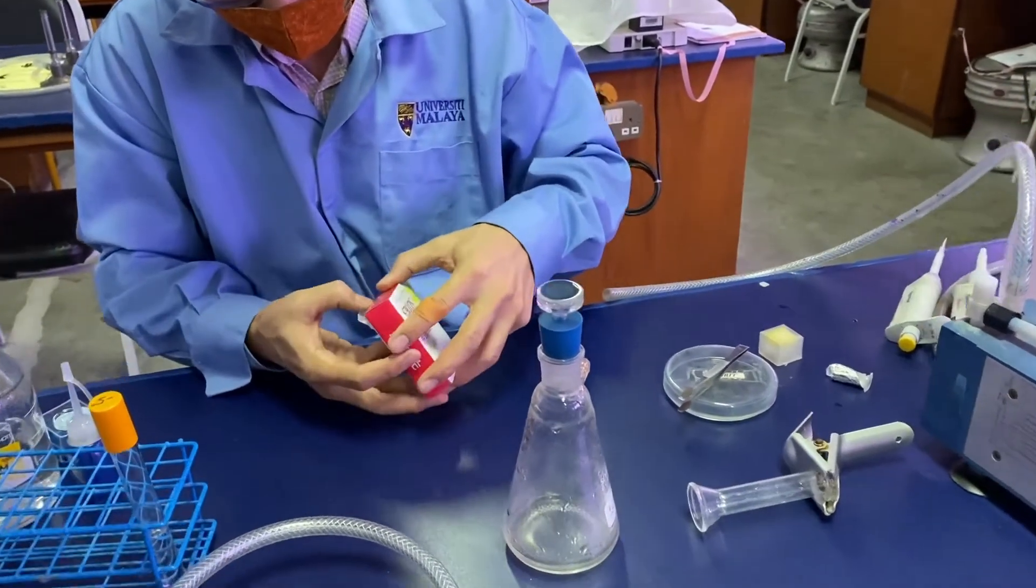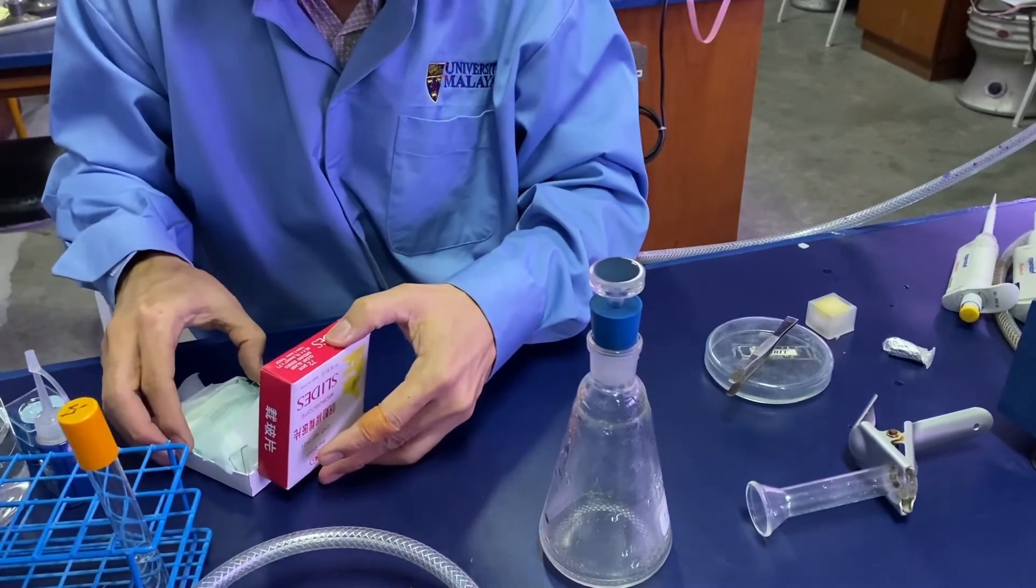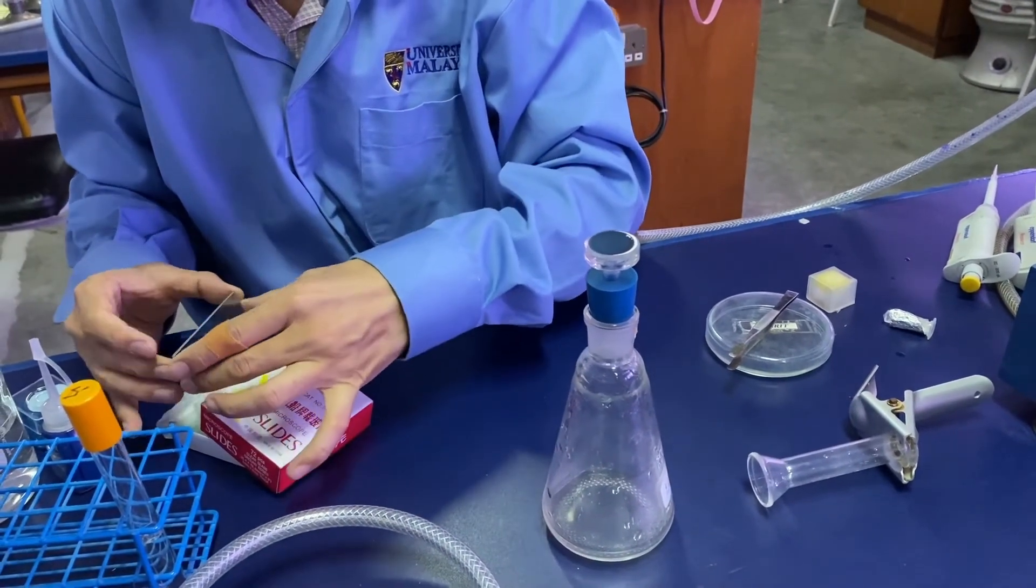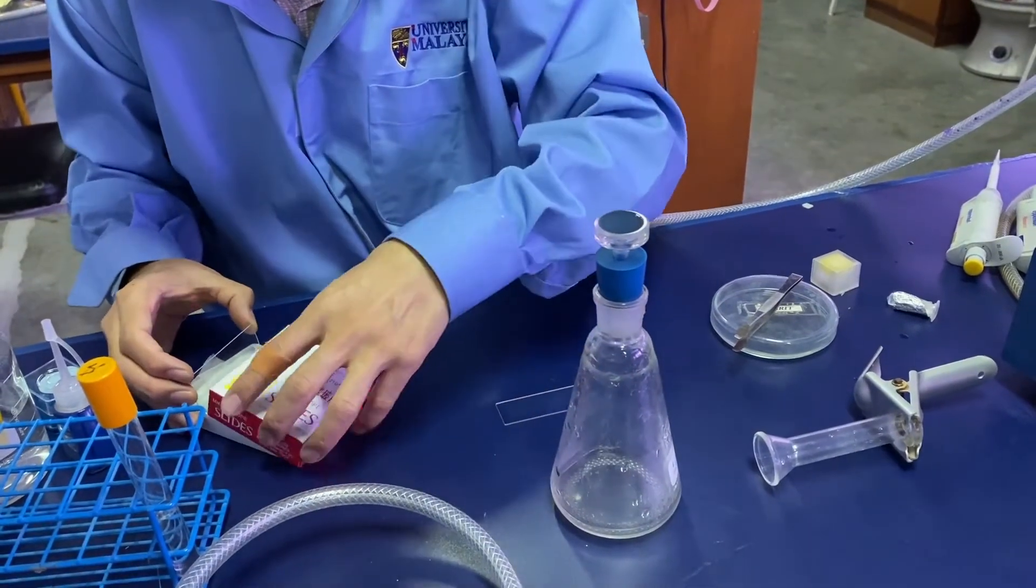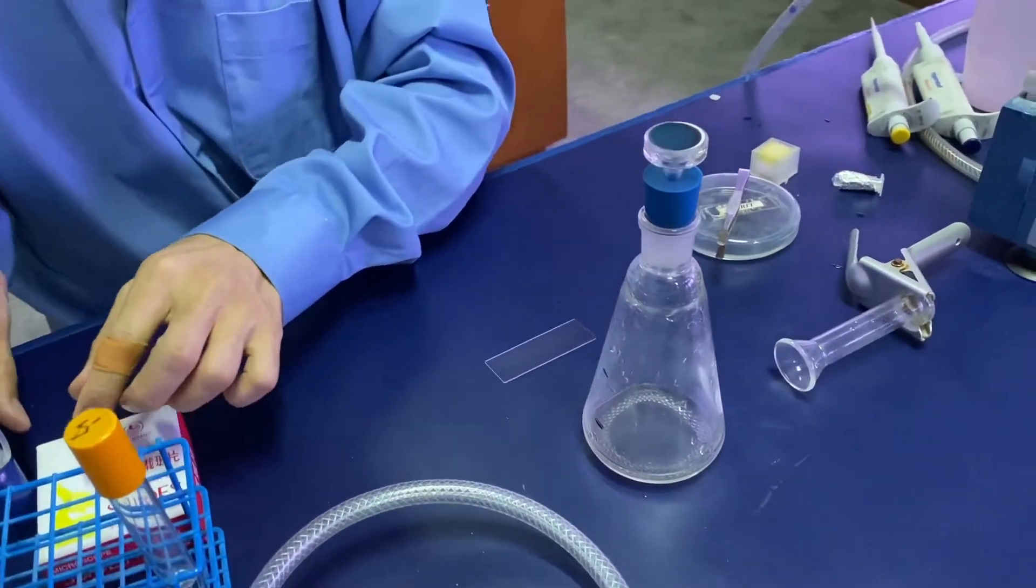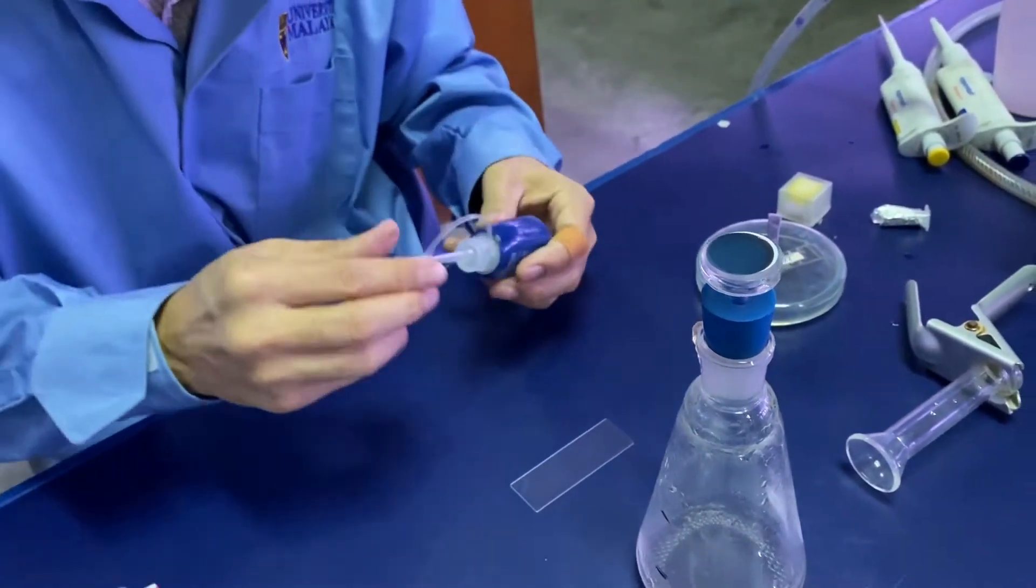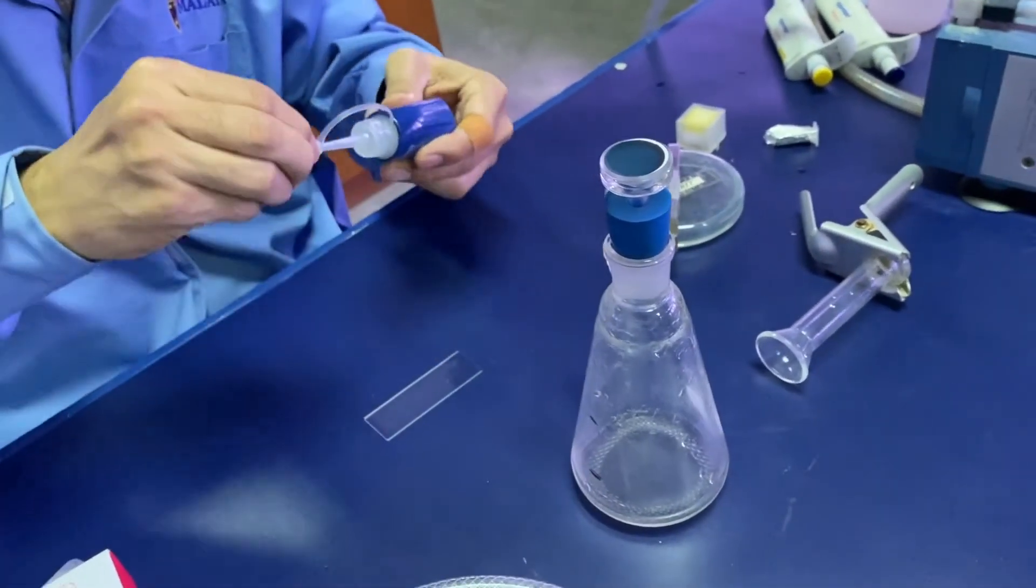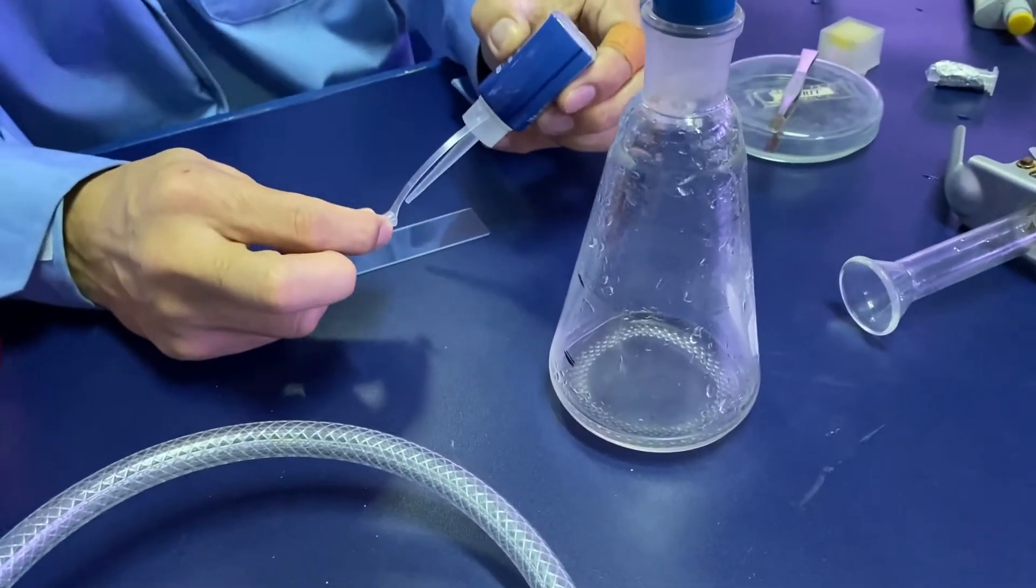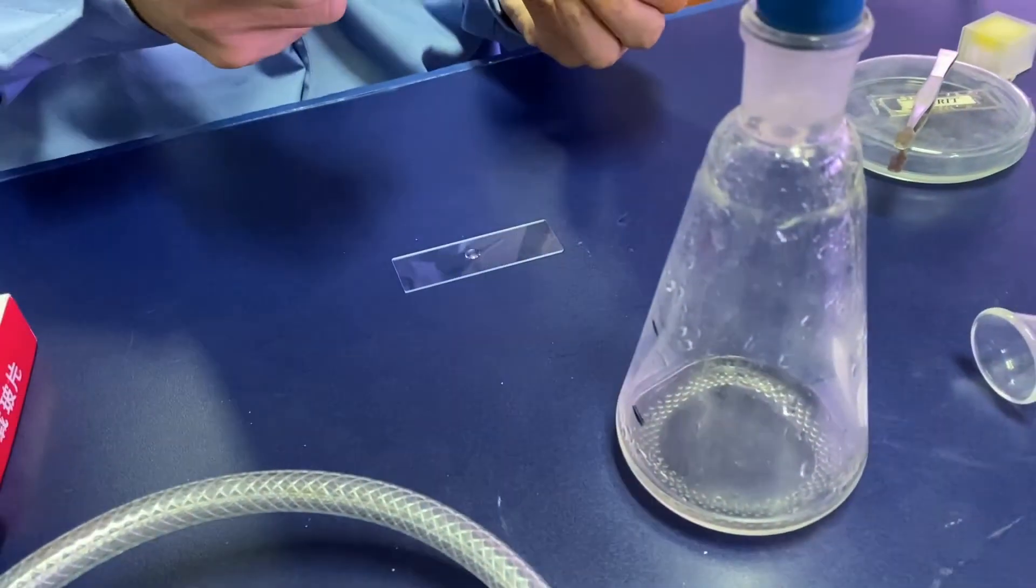To prepare the slides for direct counting, get a clean glass slide and place one drop of immersion oil that is suitable for epifluorescence microscope onto the glass slide.